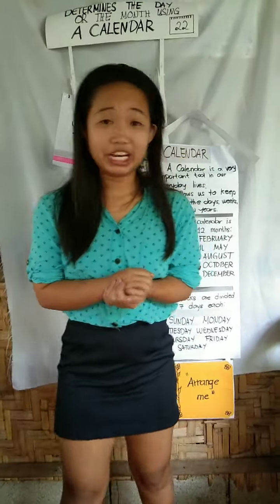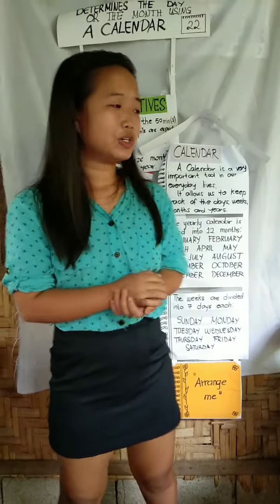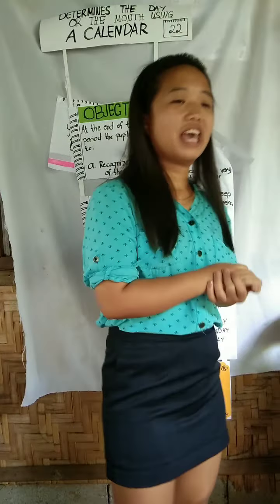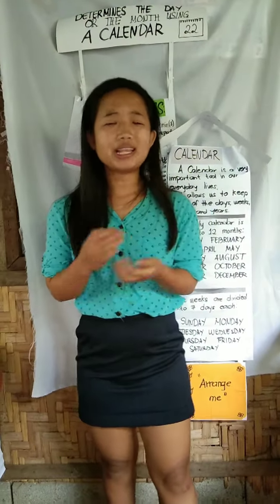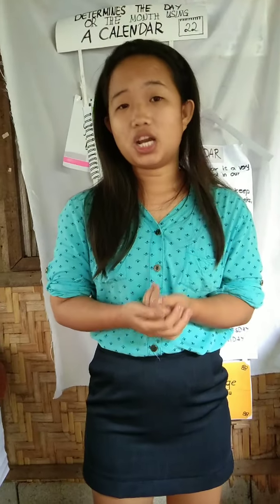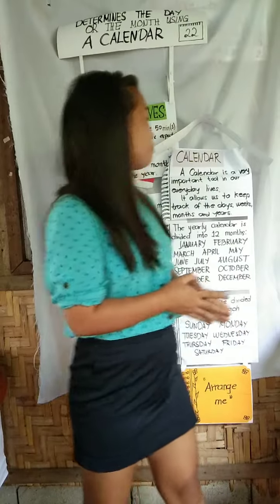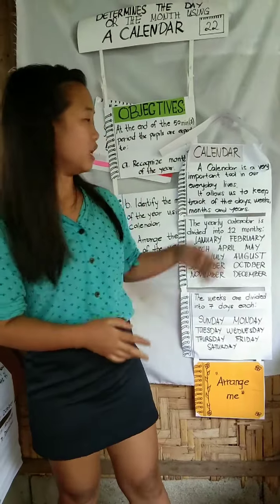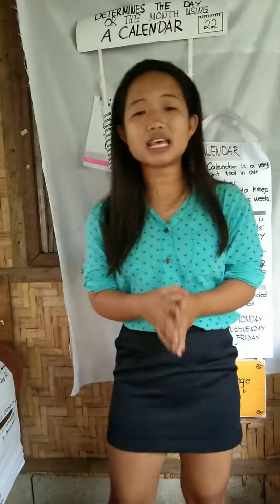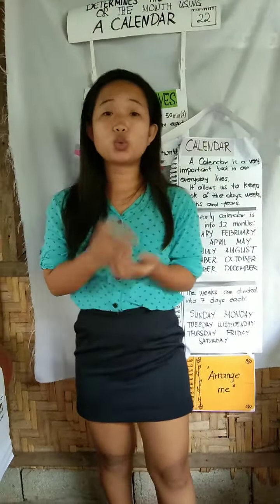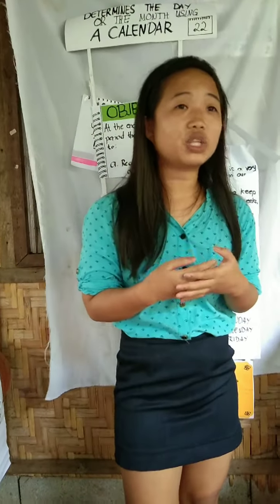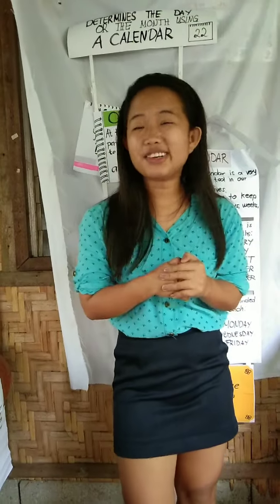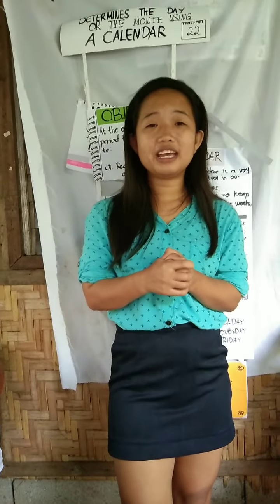In general, how many months are there in a year? 12 months. Why is it important to determine the month of the year? Because a calendar is a very important tool in our daily lives — it allows us to keep track of the days, weeks, months, and years. What tool do we use to identify the months of the year? We use the calendar.